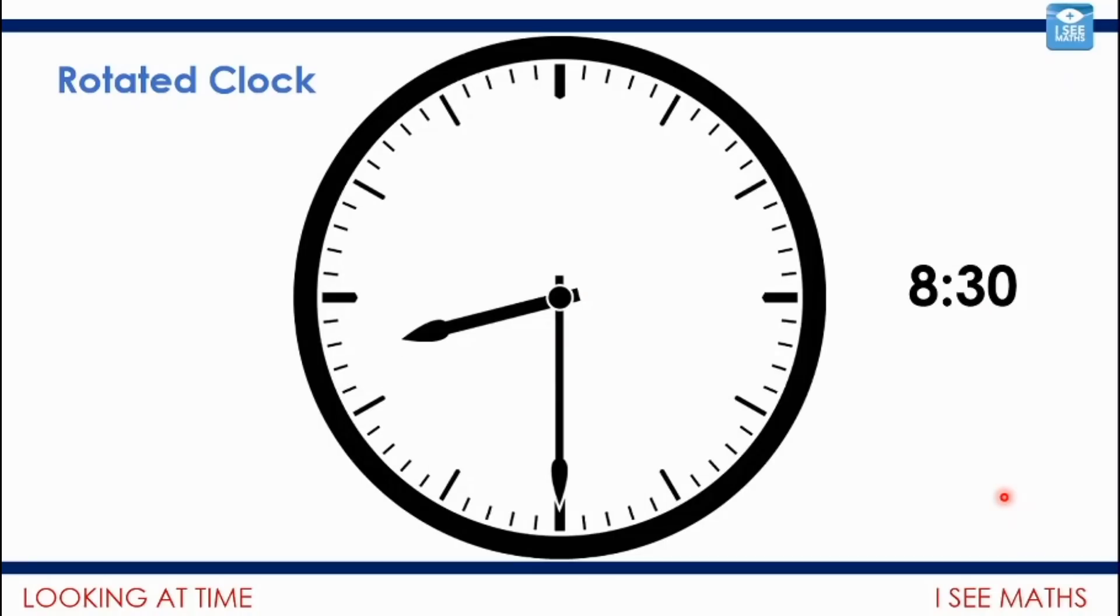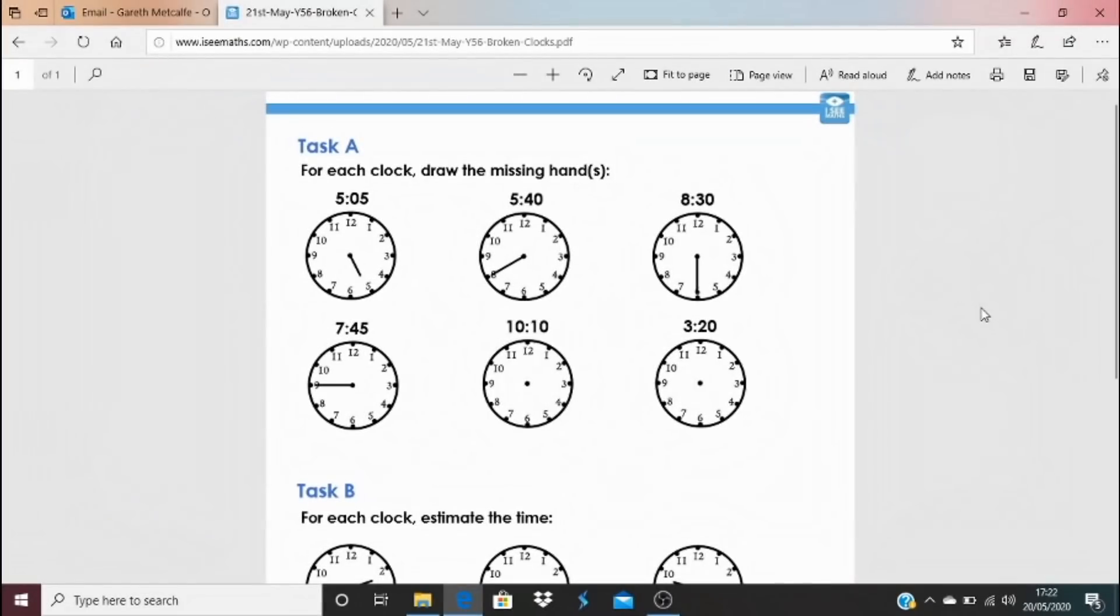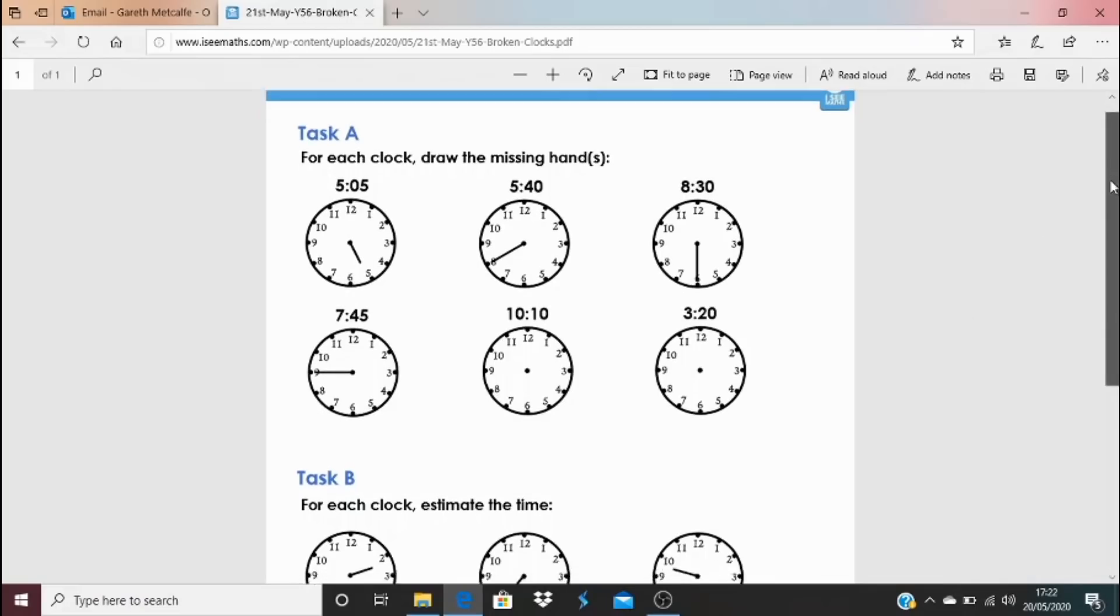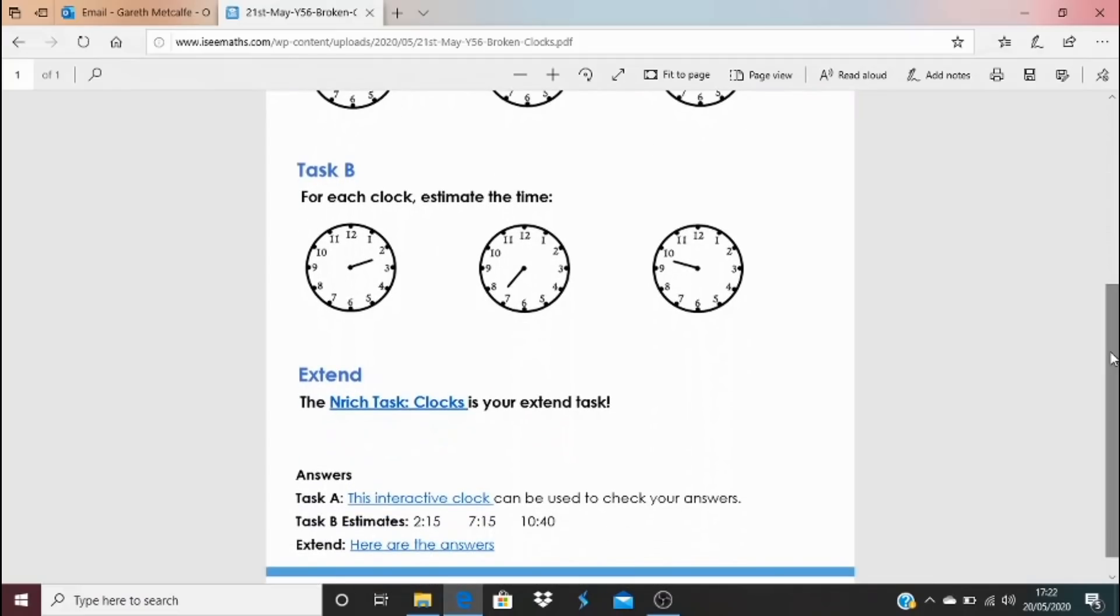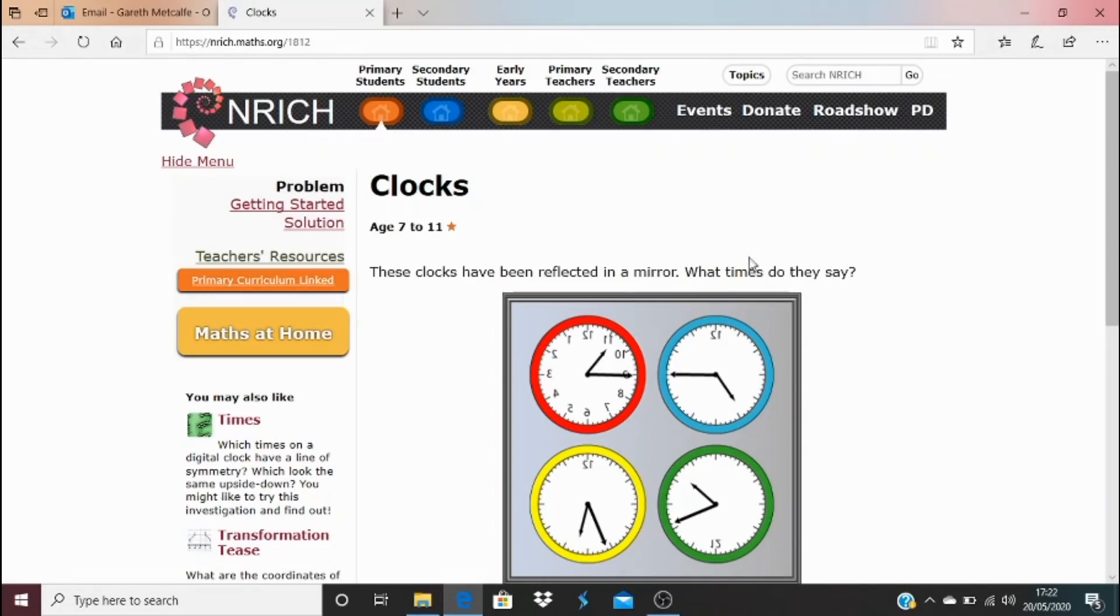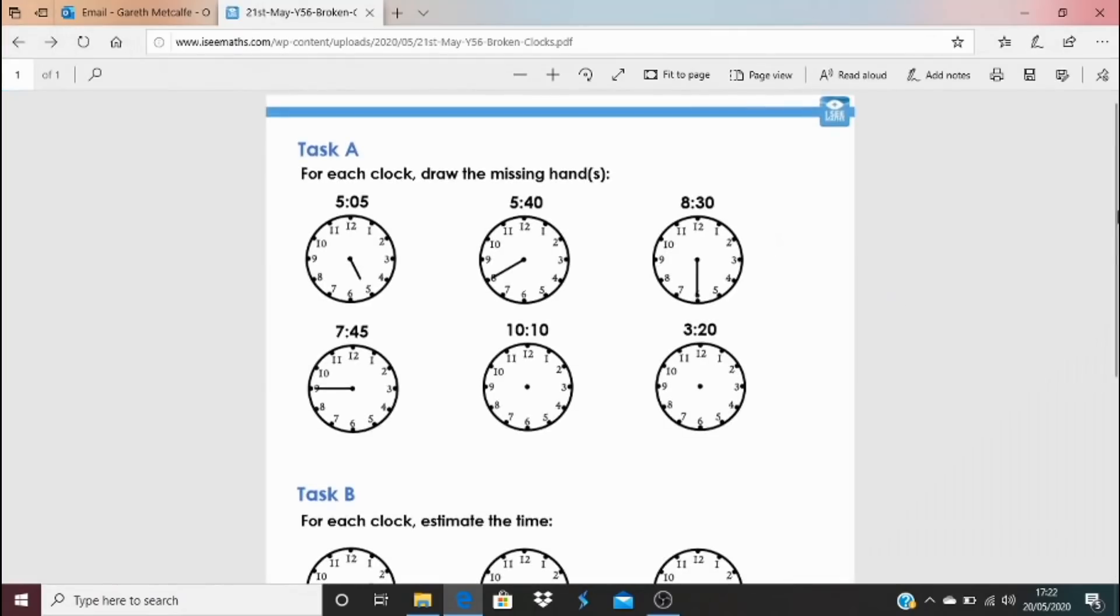You'll find today's task by clicking on the blue link underneath the video. If you really feel like you're getting your head around reading time from clocks and those missing hand questions and so on, have a go at task A and or maybe task B. Now, equally, you might prefer to have a go at the extend task, which is more on the lines of the rotated clock type activity. The answers to that are here. And the actual task itself is an enriched task, which you'll find just here. So I'll not explain that. Have a read. If you want a little help with that, you can click on the getting started prompt as well.